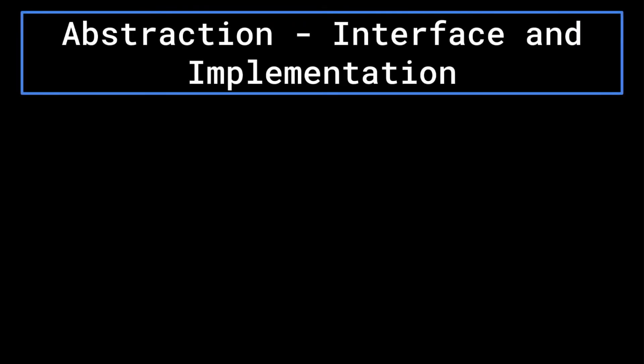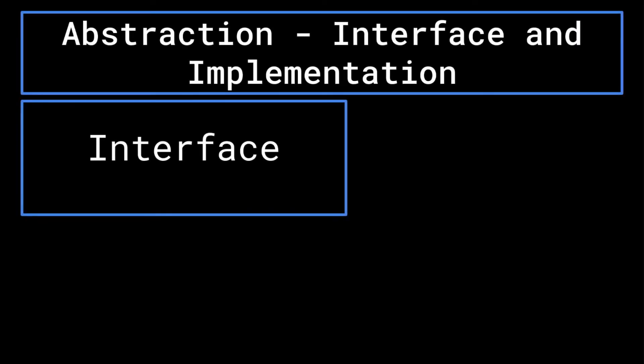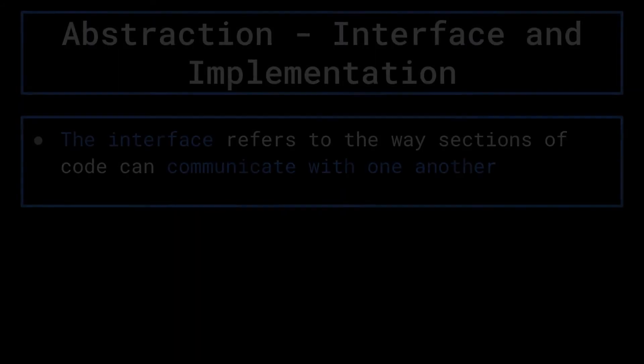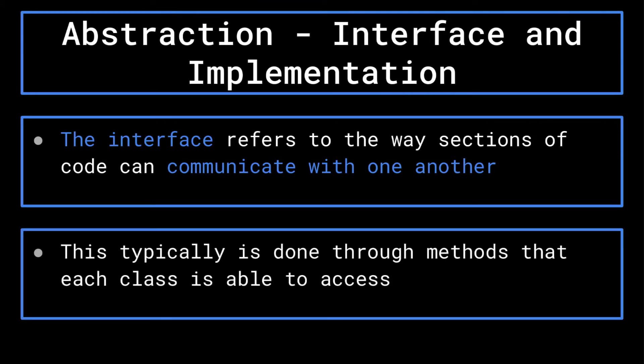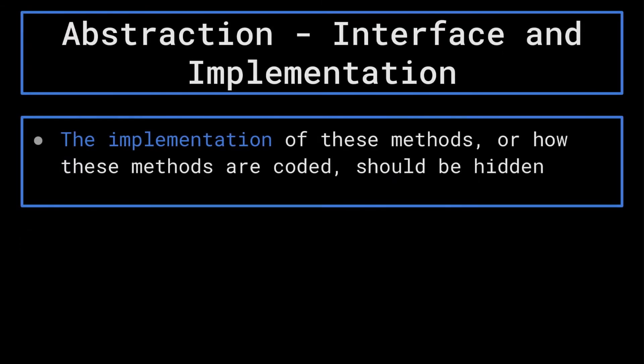To achieve this, it's best to think of your program in terms of interface and implementation. The interface refers to the way that sections of code are able to communicate with one another. This is typically through methods that each class is able to access. The exact implementation of these methods, or how the methods are coded, should be hidden within the class and not accessible from the outside.